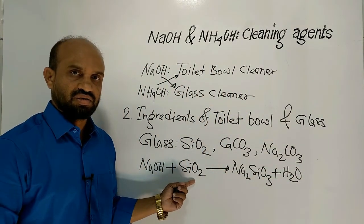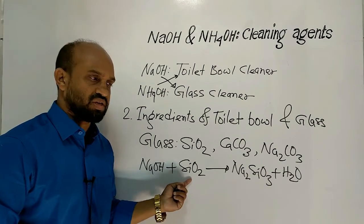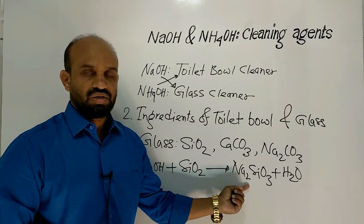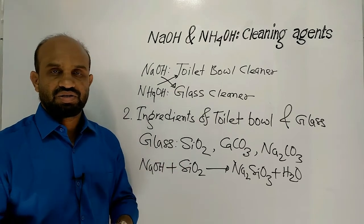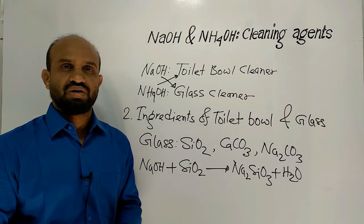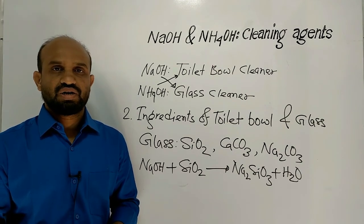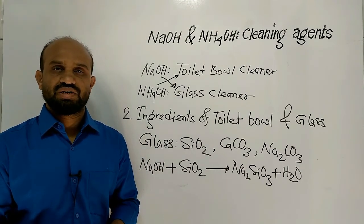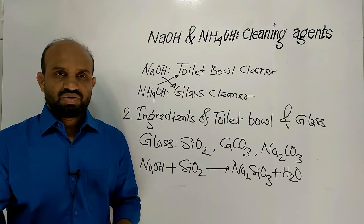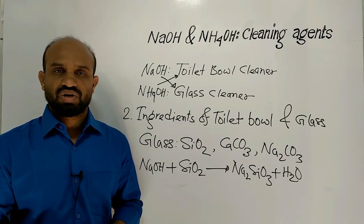When sodium hydroxide is used in glass cleaner, it reacts with silica and forms sodium silicate and water. In this way glass is decayed — that means destroyed. But ammonium hydroxide cannot react with silica because of its weakness. So it is justified to use sodium hydroxide in toilet bowl cleaner and ammonium hydroxide in glass cleaner, since sodium hydroxide is a strong base that can remove high-concentration dirt from the toilet bowl easily.